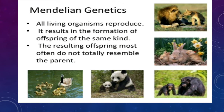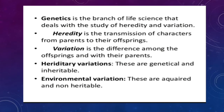This is basically a genetics chapter where we would be learning about different phenomena of genetics. All living organisms show reproduction and it results in formation of offspring of the same kind — that is how we define reproduction, as we had covered in the previous unit. The resulting offspring mostly do not resemble the parent exactly; they are a mixture of both the parents.